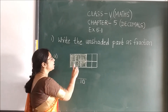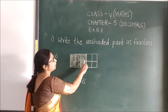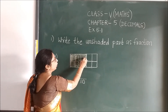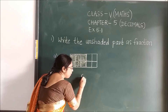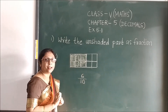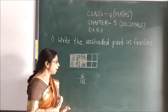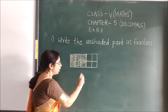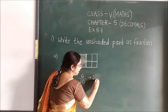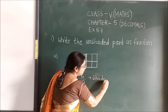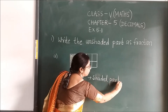Clear? Now see the shaded part. Which is the shaded part? 1, 2, 3, 4, 5, 6. So 6 parts are shaded. From the total 10 parts, 6 parts are shaded. So here this we will call it as the shaded part.